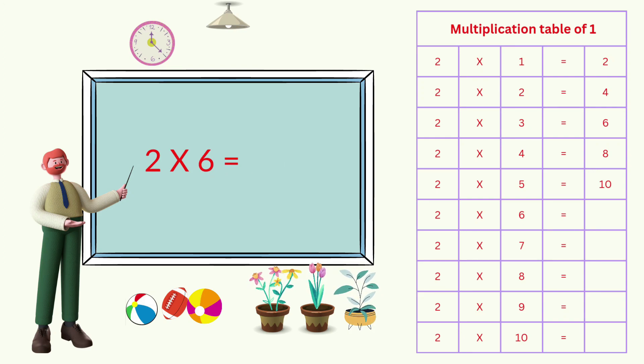2 times 6 equals 12. 2 times 7 equals 14. 2 times 8 equals 16. 2 times 9 equals 18. 2 times 10 equals 20. Let's do it again.